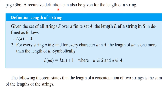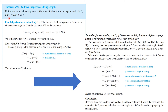A recursive definition can also be given for the length of a string. Given the set of all strings over a finite set A, the length of string l in S is defined as follows: the length of the null string is zero, and for every string u in S and every character a in A, the length of ua is one more than the length of u — that is, l(ua) equals l(u) plus 1. The theorem follows that the length of the concatenation of two strings is the sum of the lengths of the two substrings.